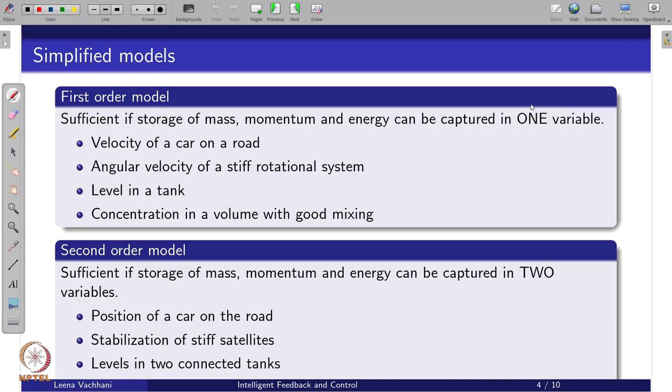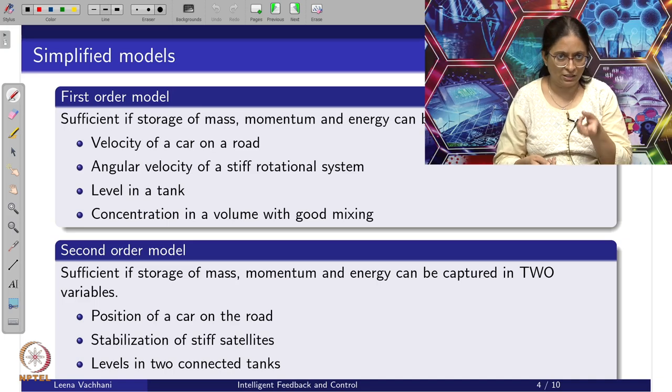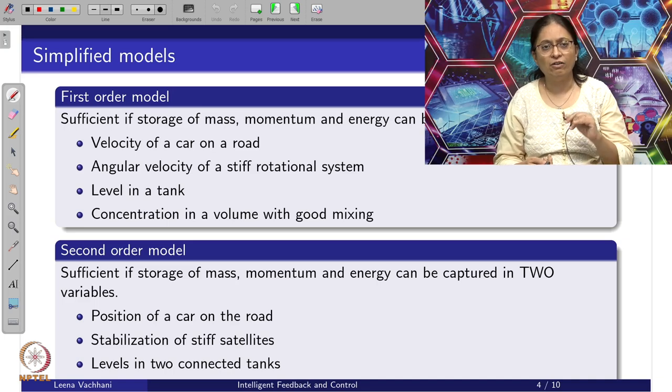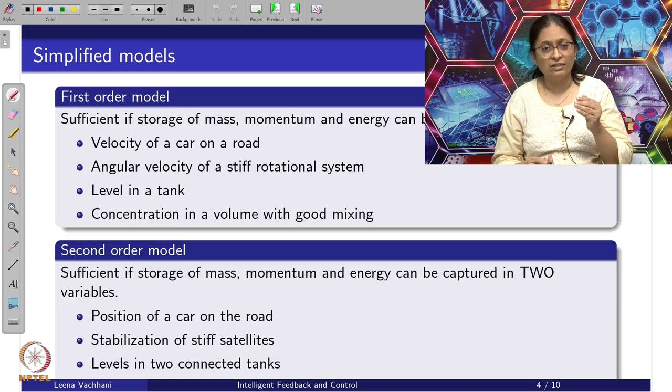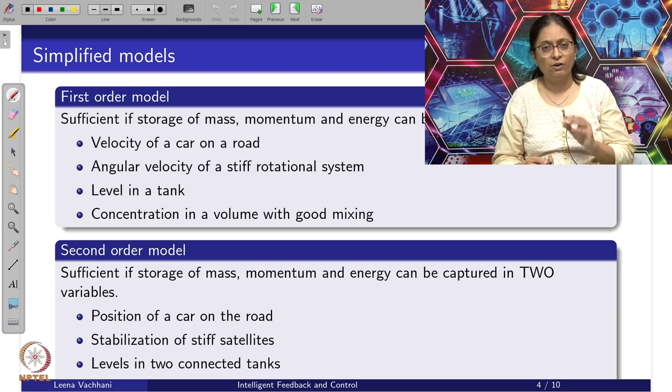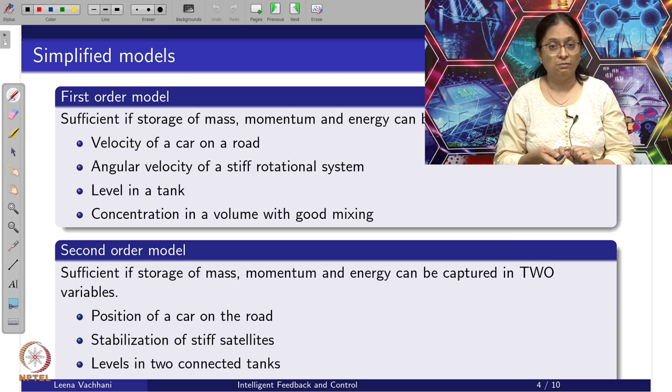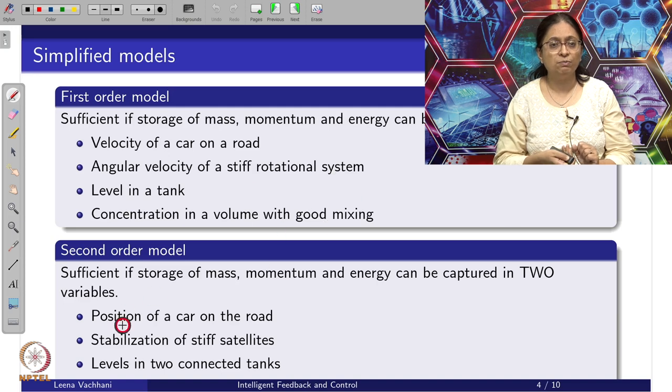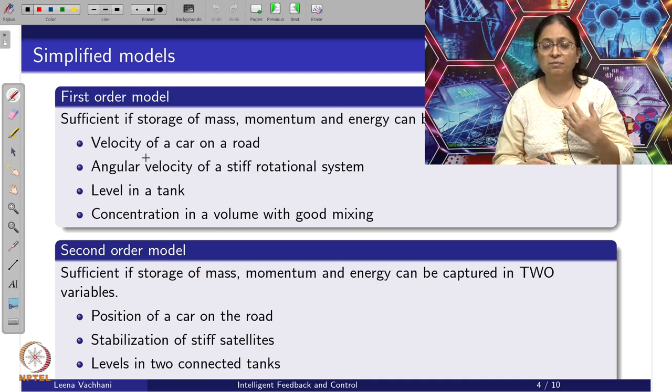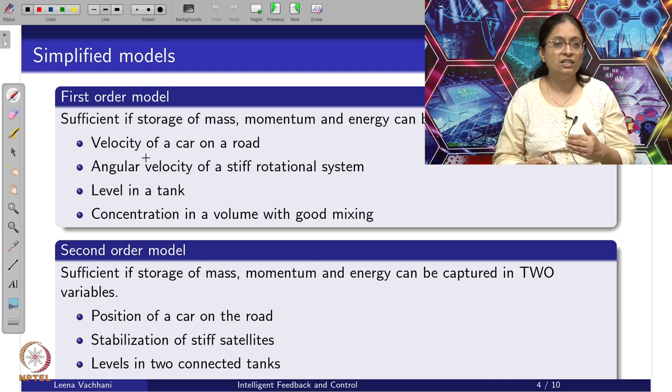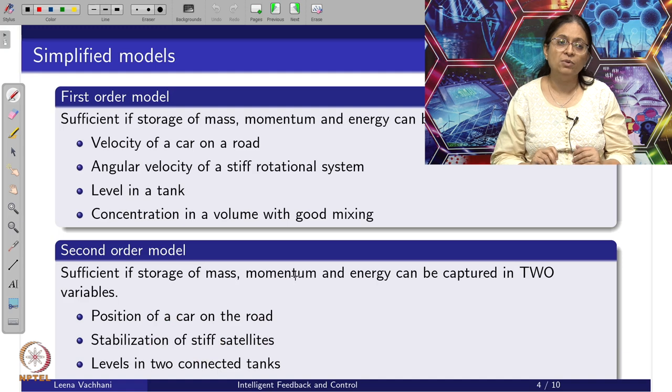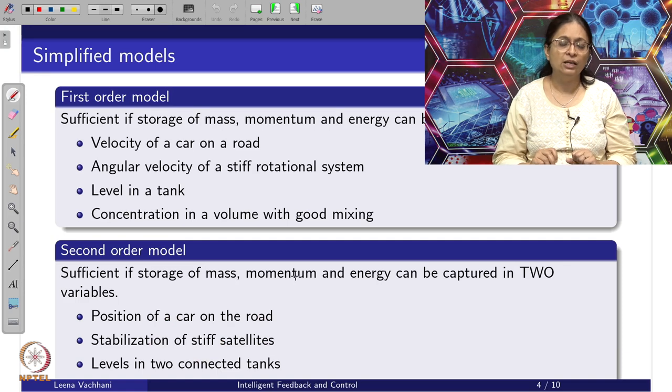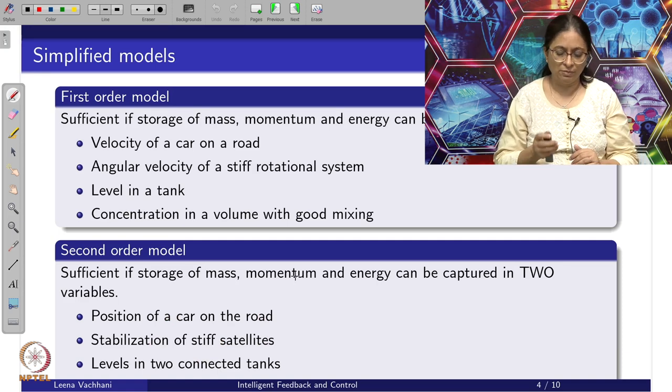Certain examples are velocity of a car on a road, angular velocity of a rotatory system, level in a tank, or concentration in a volume with good mixing. Whereas, as compared to the same methodology, if my control objective is position of a car compared to velocity, then I need to represent storage of mass, momentum, and energy captured in two variables. Similarly, stabilization of stiff satellites or level in two connected tanks becomes a second order modeling problem, and one can resort to an appropriate PID structure.